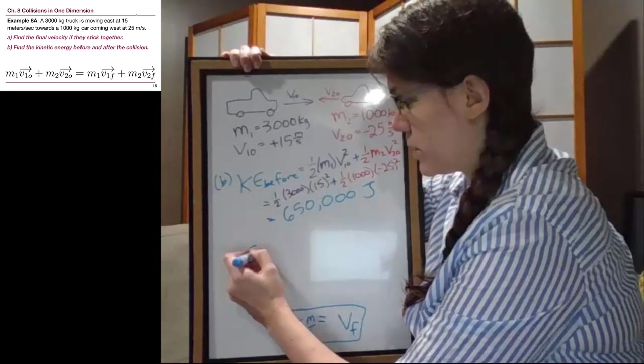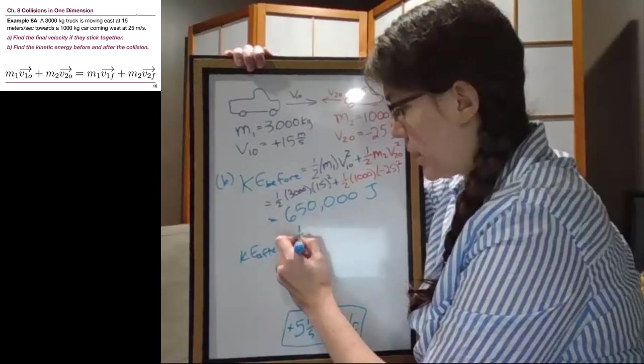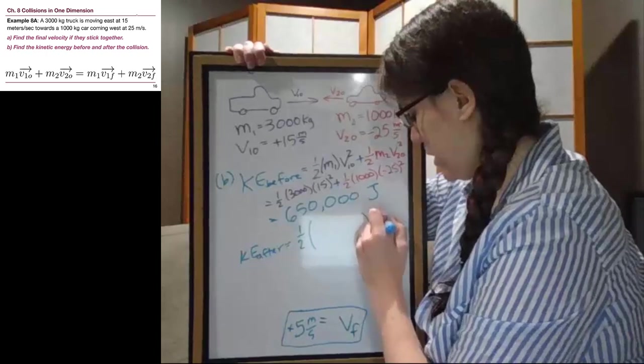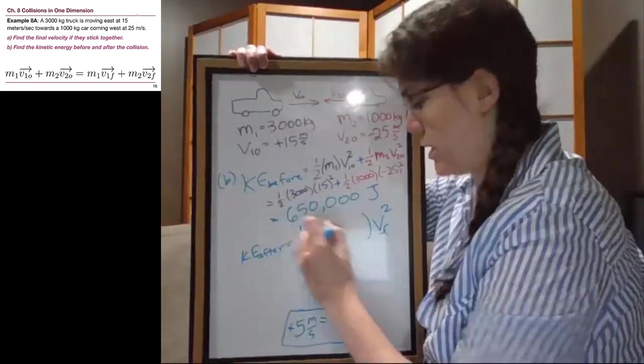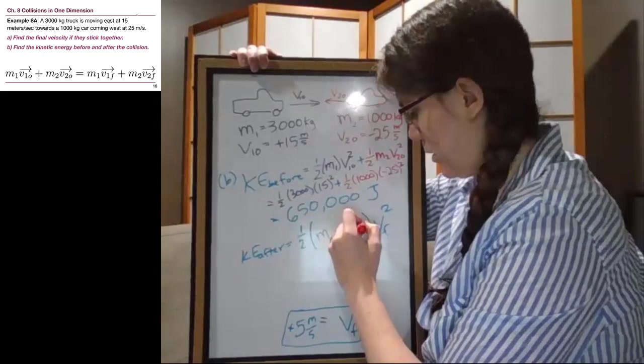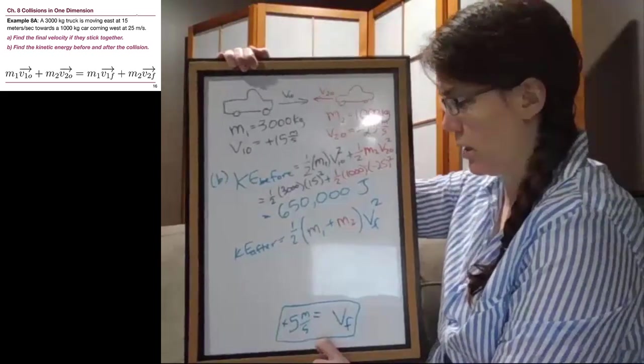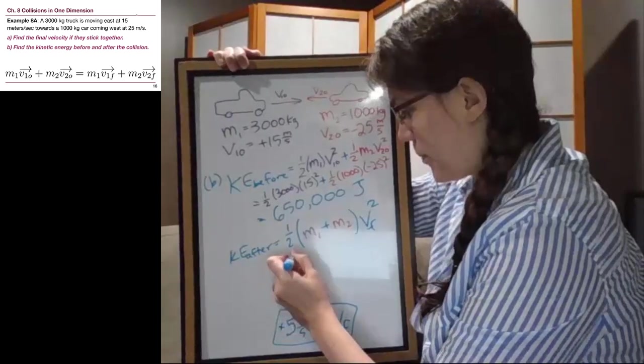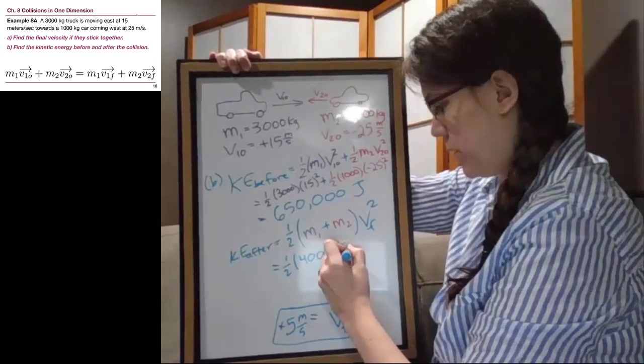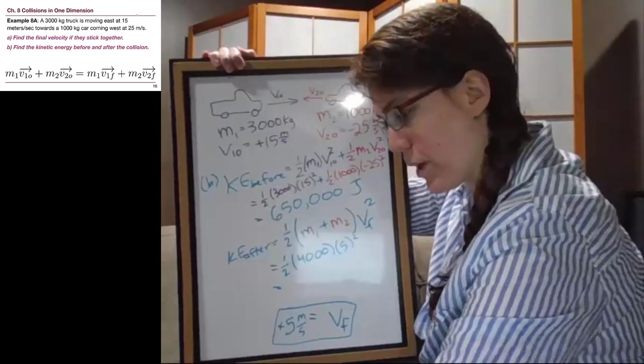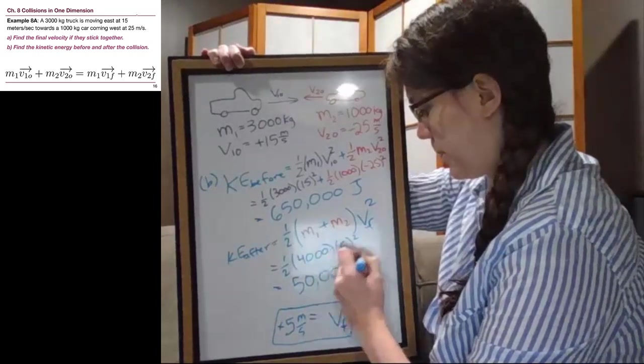Okay, the kinetic energy after, because they stuck together, is the total mass M1 plus M2 times that overall final velocity of 5 meters per second. So we have one half times 4,000, that's the total mass, times 5 squared. And so we end up with 50,000 joules.